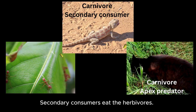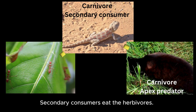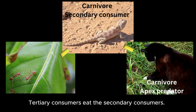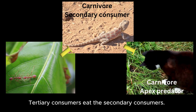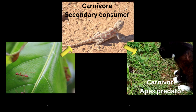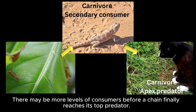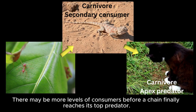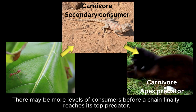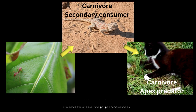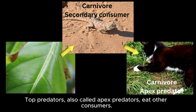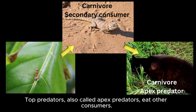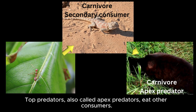Secondary consumers eat the herbivores. Tertiary consumers eat the secondary consumers. There may be more levels of consumers before a chain finally reaches its top predator. Top predators, also called apex predators, eat other consumers.